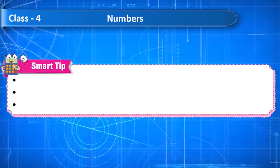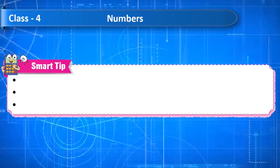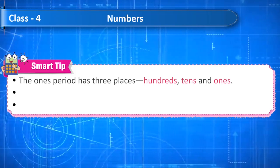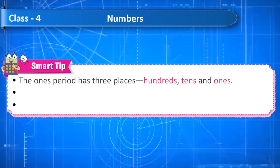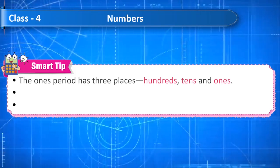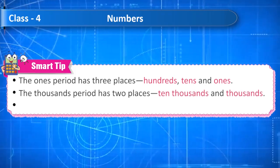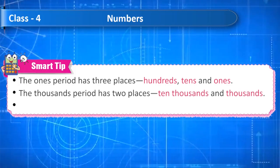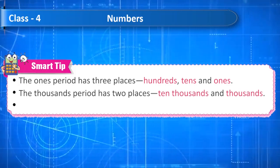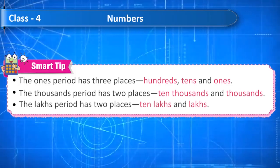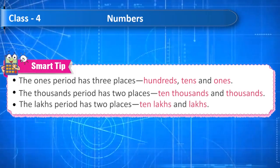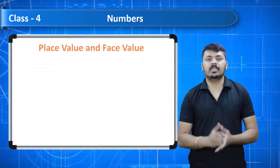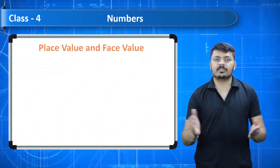Some smart tips: the ones period has three places — hundreds, tens, and ones. The thousands period has two places — ten thousands and thousands. The lakhs period has two places — ten lakhs and lakhs.